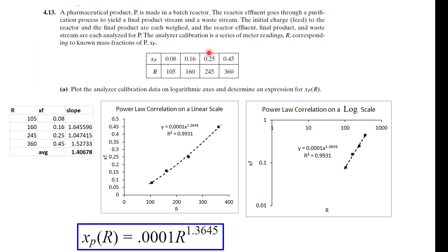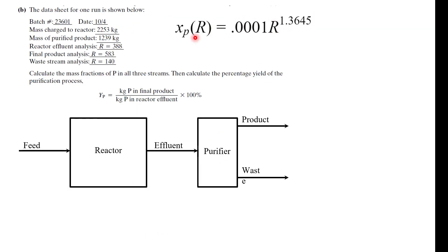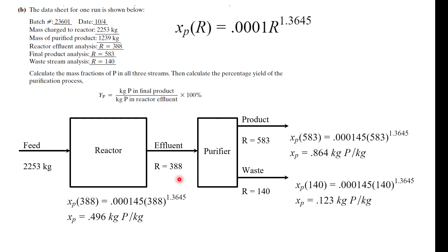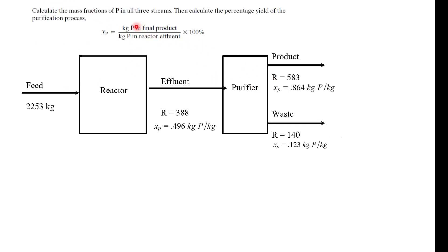Let's recap real quick. Using the data, this is a calibration curve and we are able to obtain other values other than these based on this equation. So now that we have this equation, we can plug in these values for R and using these values, now we have our analysis of our effluent and our product and our waste stream. That's pretty interesting. Now using some engineering and some experimental data, kind of like some real life stuff. These are our values and now we want to calculate the mass fraction of product in all three streams, which we did, and calculate the percentage yield of the purification process.